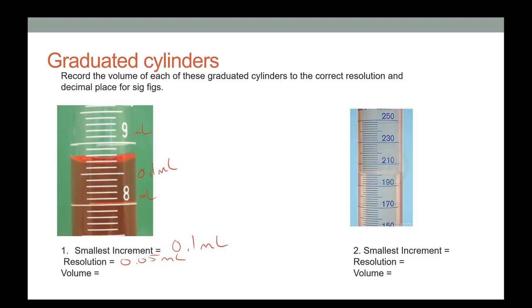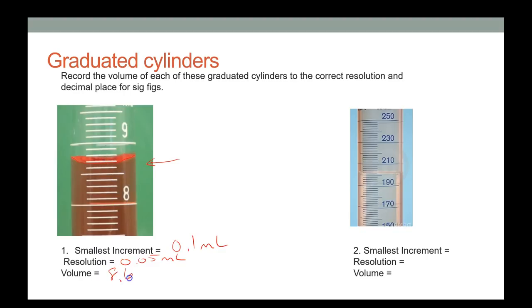When reading a graduated cylinder, you'll notice a curved valley called the meniscus. Always read from the bottom of the meniscus. My estimate for this reading is about 8.6 milliliters.